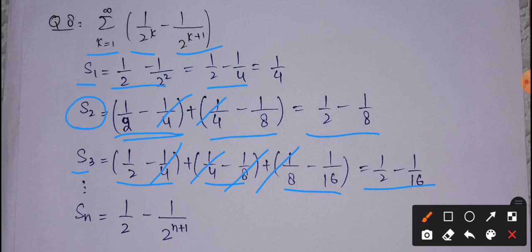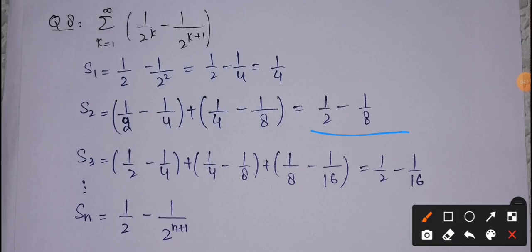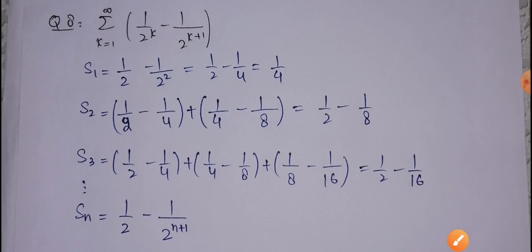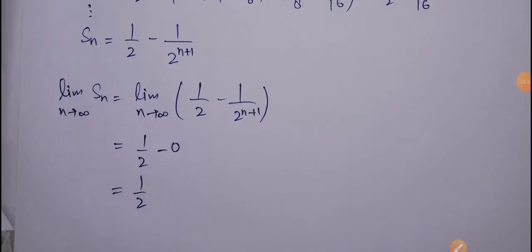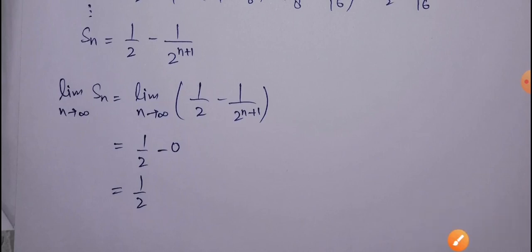We now generalize this sequence of partial sums. The 1/2 remains constant. For S_1 we have 1/2^2, for S_2 we have 1/2^3, and for S_3 we have 1/2^4. So the general term is S_N = 1/2 minus 1/2^(n+1). Taking the limit as n approaches infinity, 1/2^(n+1) goes to 0, giving the limit 1/2. Therefore the series is convergent and its sum equals 1/2.